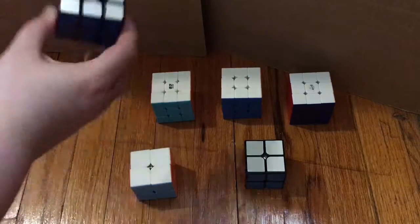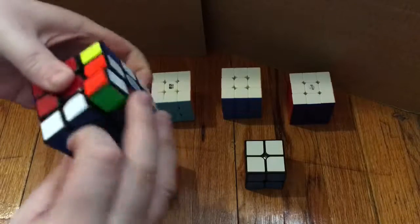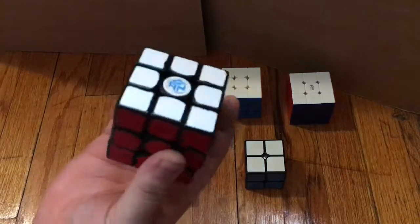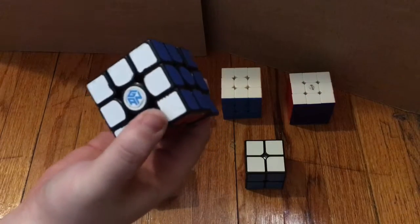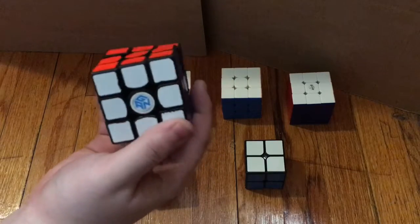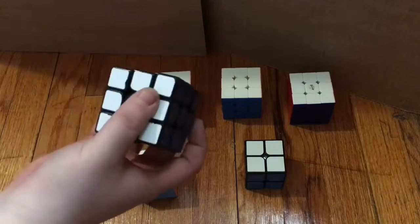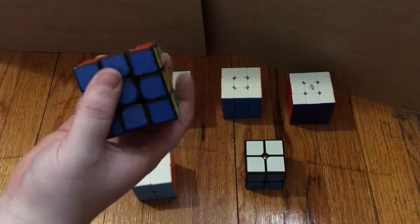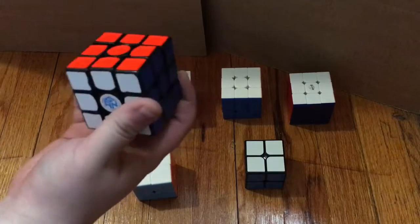Okay, the first 3x3 is going to be the Gans 356 Air V2. It's a great cube. It's around $30. I think you could buy it for $25 on thecubicle.us, but it's a great cube. It turns really well right out of the box. With lube it turns really well. I got my best PB on this. It's a great cube and I highly recommend it.